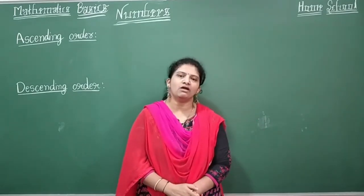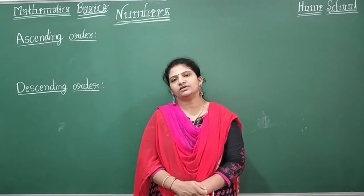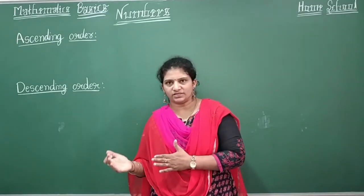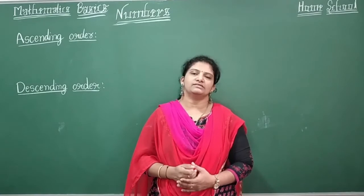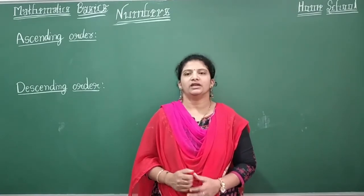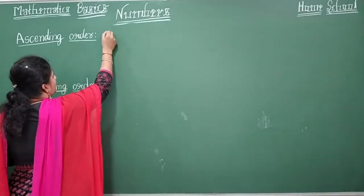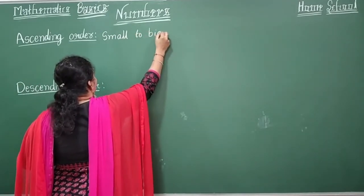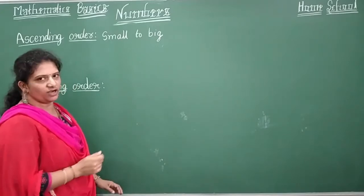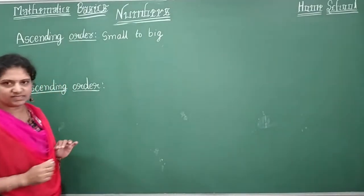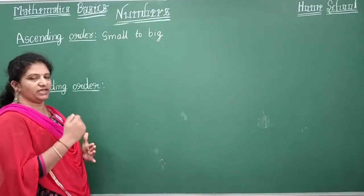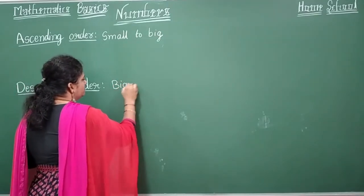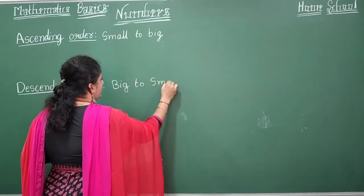What is ascending order? The arrangement of numbers from smallest to biggest is called ascending order — you can remember it as small to big. And what is descending order? The arrangement of numbers from the biggest number to the smallest number, so big to small.